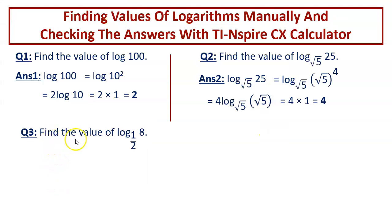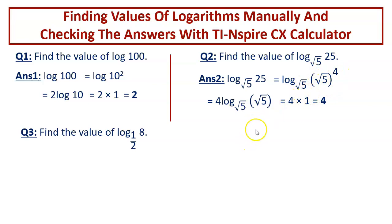Now question number 3: find the value of log of 8 to the base half. In the previous two questions we expressed the argument as some power of the base. Here the base is half. 8 is 2 to the power of 3, so can we make the base equal to 2? Half can be written as 2 to the power of negative 1. So let us change the base to 2 instead of half.